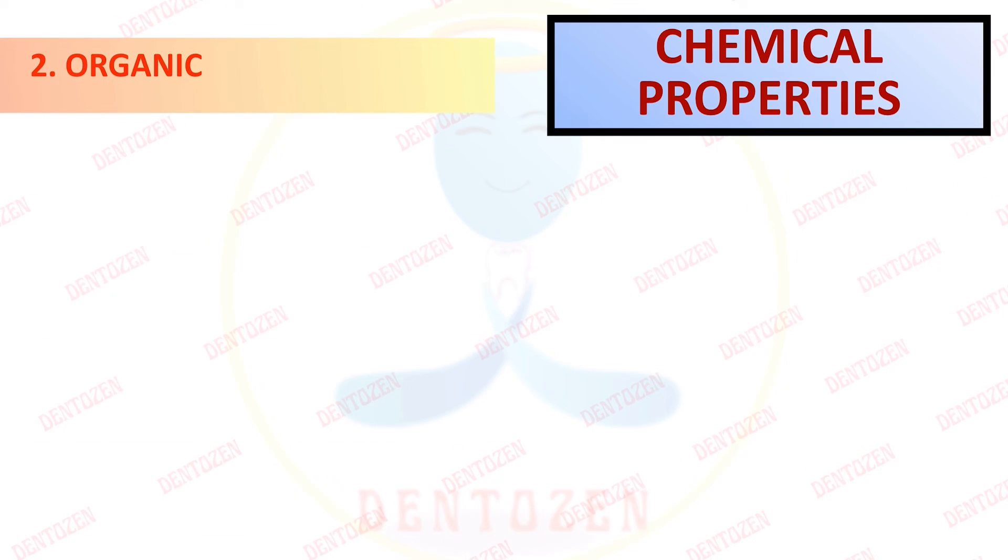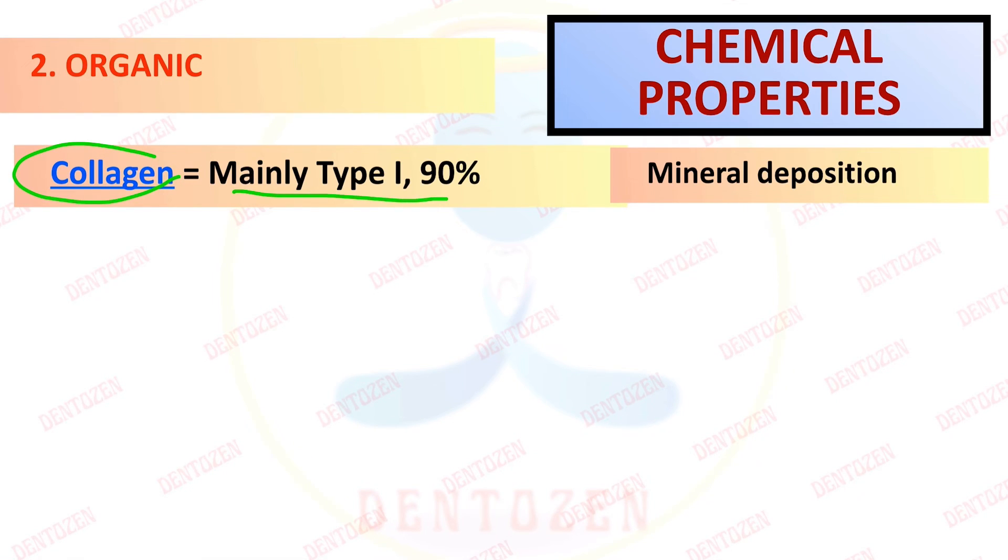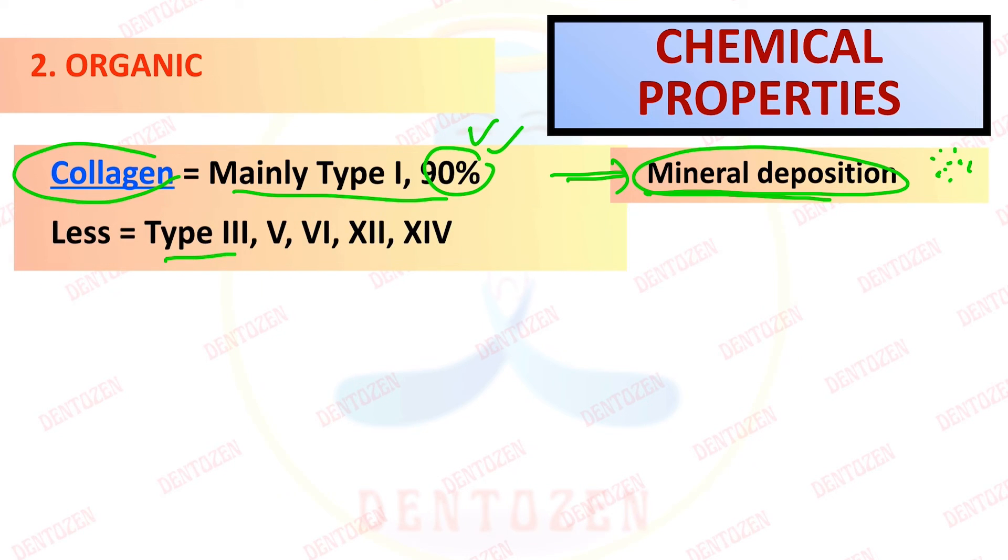Now let's talk about the organic component. It is mainly collagen type 1, that means 90% of the organic matrix. And the role of this type 1 collagen is it accommodates mineral. Mineral deposition may help. Now other lesser collagen types like type 3, 5, 6, 12, and 14 are also seen.